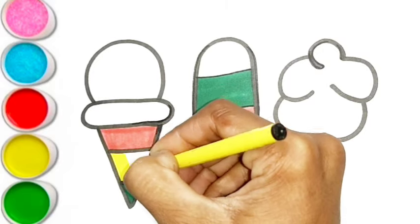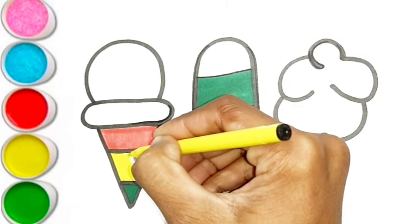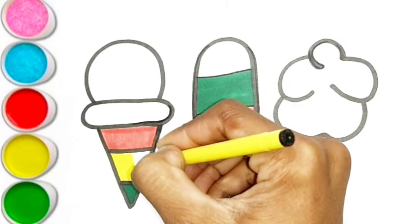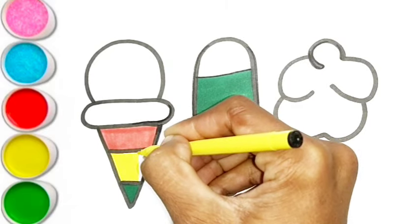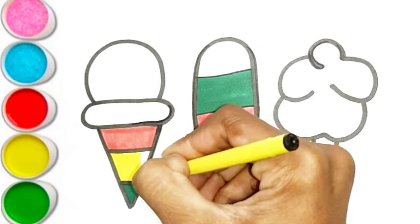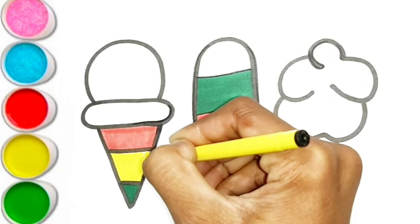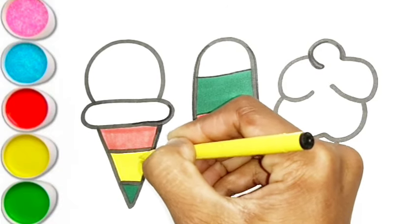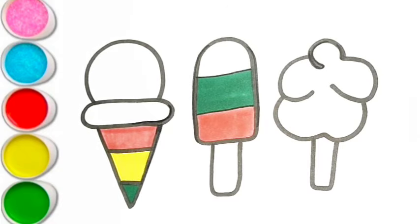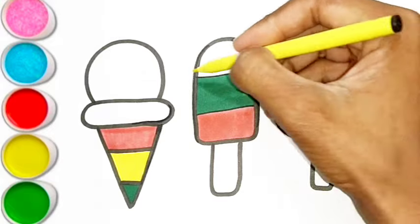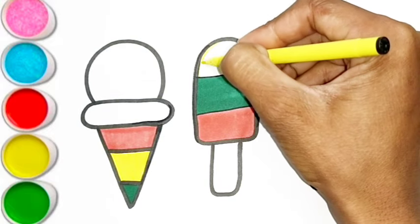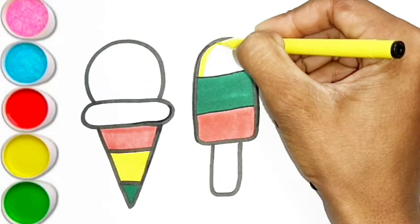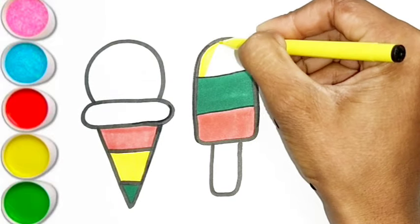P is for pet. P, p, pet. Q is for queen. Q, q, queen. R is for rabbit. R, r, rabbit.